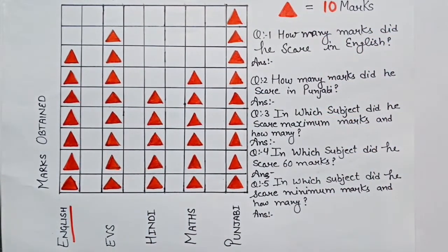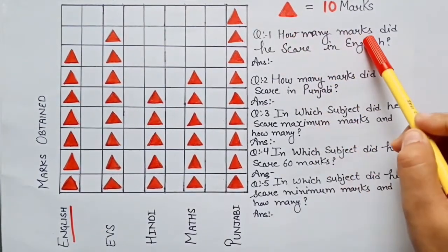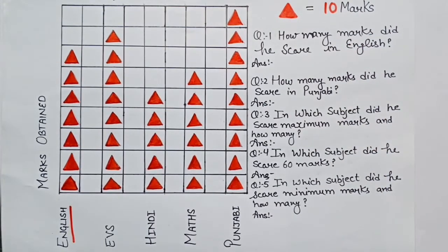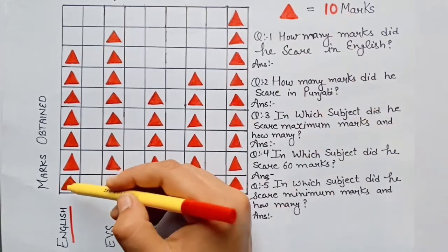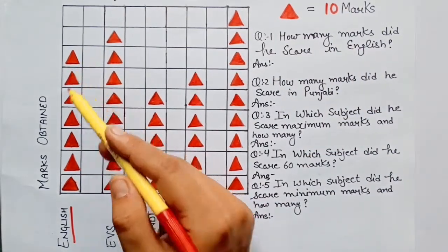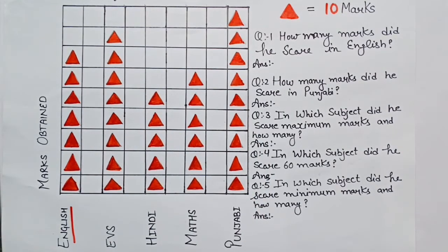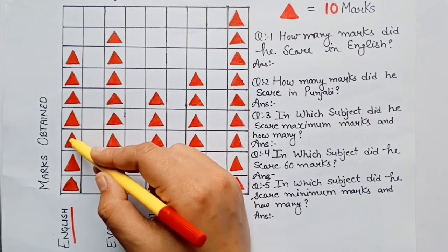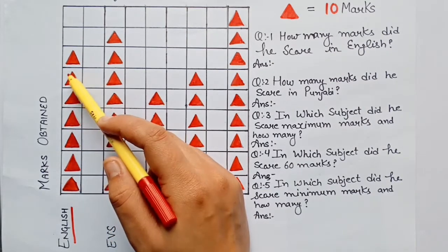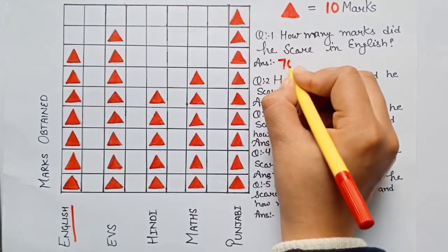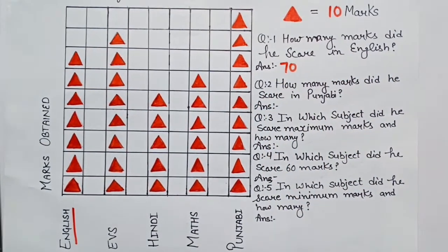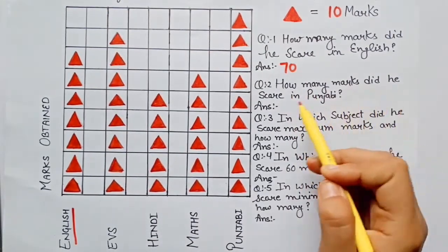The first question is: how many marks did he score in English? Rahul ne English mein kitne marks score kiye hain? In English, there are 7 triangles. Each triangle equals to ten marks, so that is 10, 20, 30, 40, 50, 60, 70. He scored 70 marks in English.